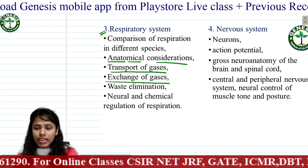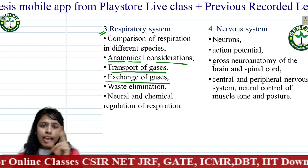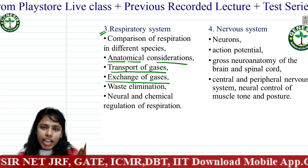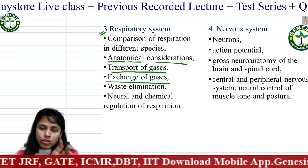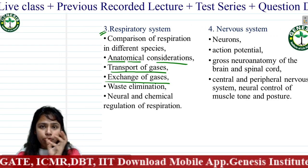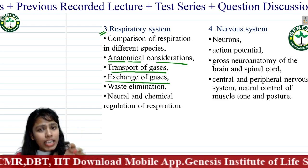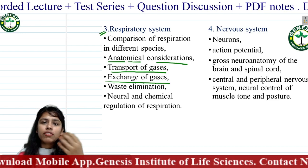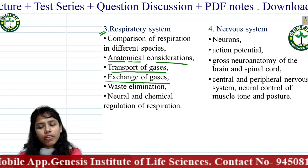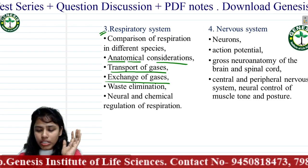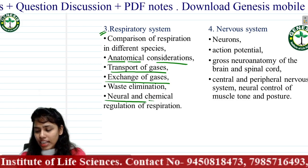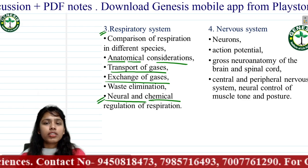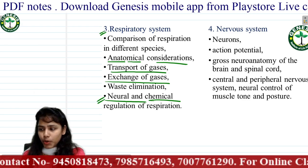You will also learn the types of respiration: internal respiration and external respiration. External respiration is essentially breathing — which includes inspiration and expiration — while internal respiration is cellular respiration. We will cover all these together, and again you will study the neural and chemical regulation of the respiratory system.